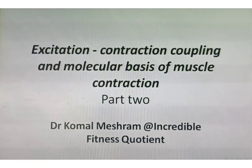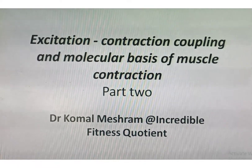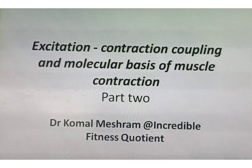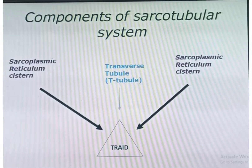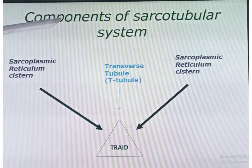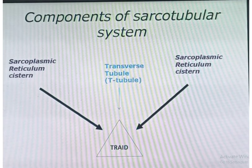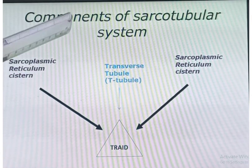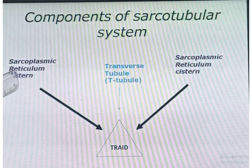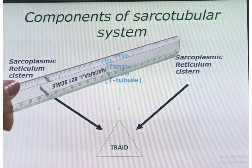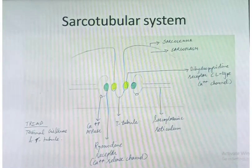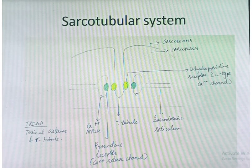Hello students, welcome to my channel Incredible Fitness Quotient. This is Part 2 of excitation-contraction coupling and molecular basis of muscle contraction. The sarco-tubular system consists of membranous structures surrounding the muscle fiber fibrils. As you can see in the diagram, it consists of the sarcoplasmic reticulum, transverse T-tubules, and again the sarcoplasmic reticular system, forming the triad.